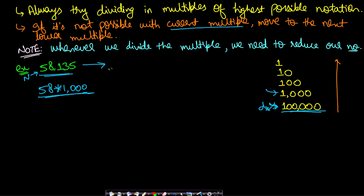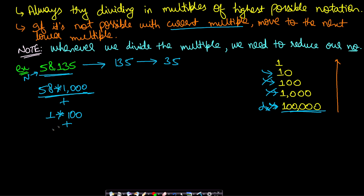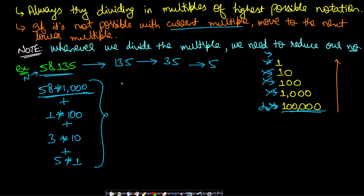135 is not divisible by 1000, so we move to 100. 135 ÷ 100 = 1, so we write 1×100, leaving 35. 35 is less than 100, so we move to 10. 35 ÷ 10 = 3, so we write 3×10, leaving 5. Finally, 5 ÷ 1 = 5, giving 5×1. The most accurate representation is 58×1000 + 1×100 + 3×10 + 5×1.